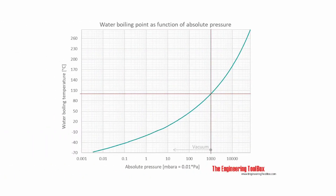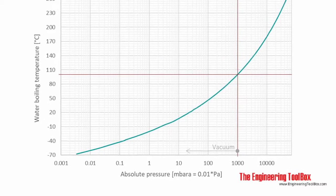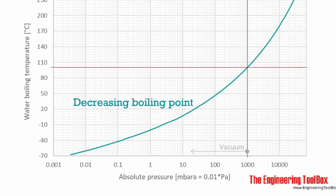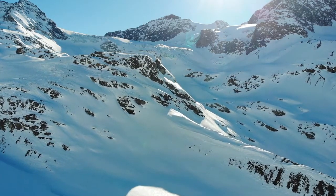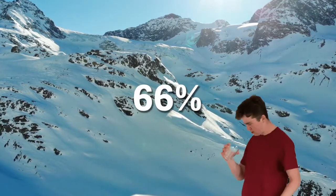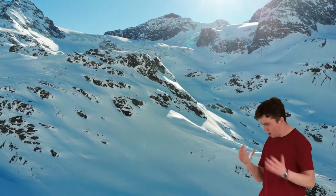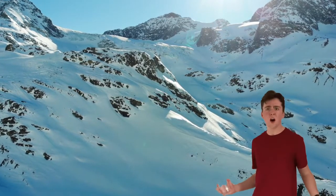Take a look at this graph. On the x-axis is pressure and on the y-axis is temperature. As we can see, the boiling point of water decreases with pressure. For example, if you're on the top of Mount Everest, the atmospheric pressure is reduced by 66%, meaning water will boil at a temperature of 68 degrees Celsius.